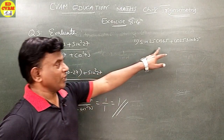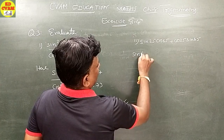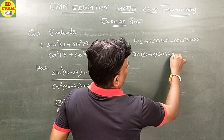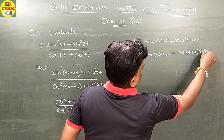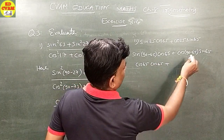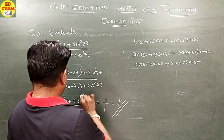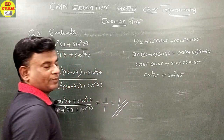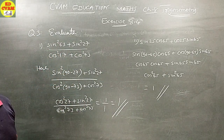For Question 3 part 2: sin 25 cos 65 plus cos 25 sin 65. Rewrite sin 25 as sin(90 minus 65) which equals cos 65, and cos 25 as cos(90 minus 65) which equals sin 65. This gives cos 65 times cos 65 plus sin 65 times sin 65, which equals cos squared 65 plus sin squared 65, equal to 1.